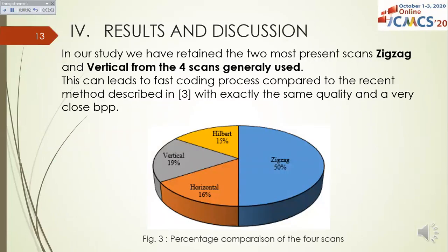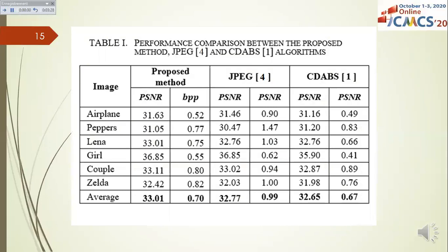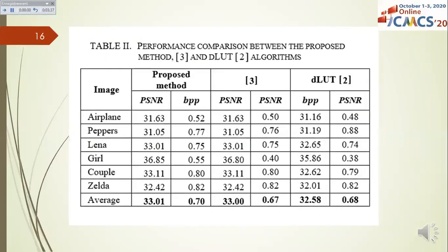In our study, we retained the two most prevalent scans — zigzag and vertical — from the four scans generally used. This scan selection leads to a fast coding process compared to a recent method, with exactly the same quality and very close bits per pixel (BPP). To measure the efficiency of the proposed method, we used these parameters. Tables 1 and 2 present comparative results with several methods, and it is easy to see the superiority and high performance of the proposed technique compared to the other methods.